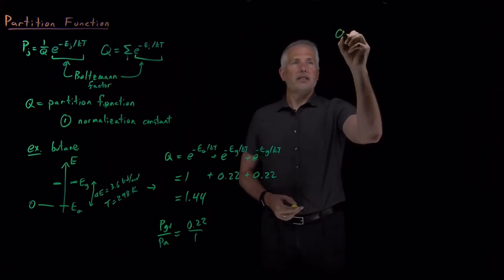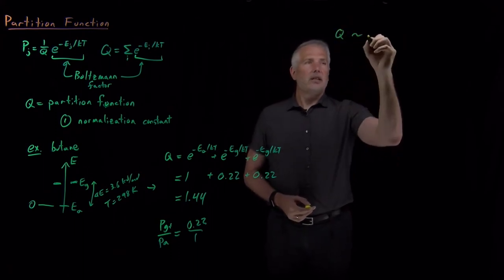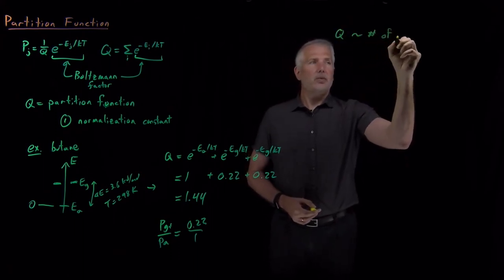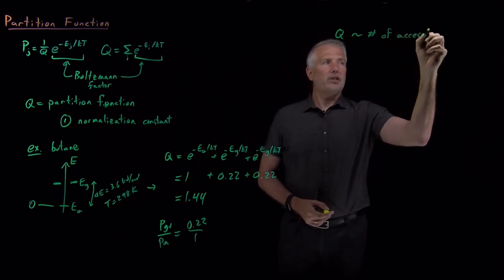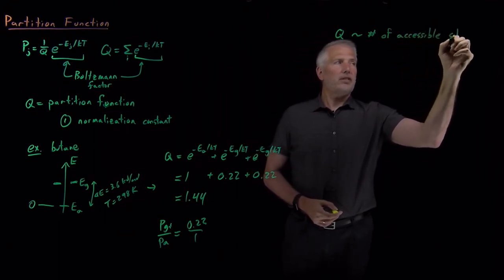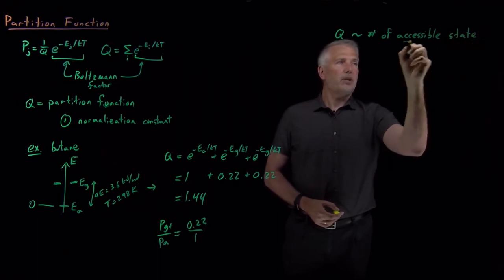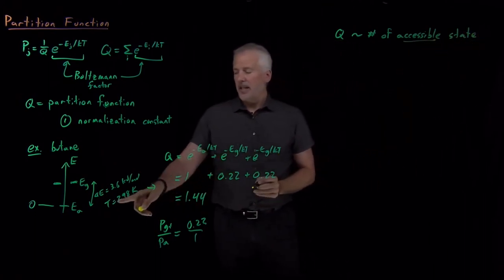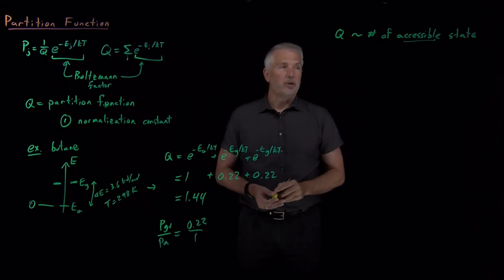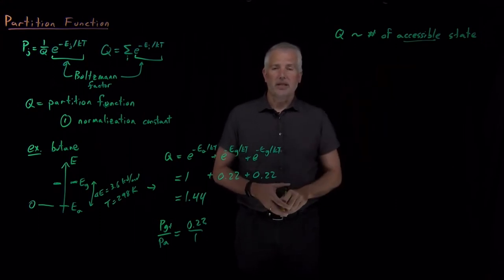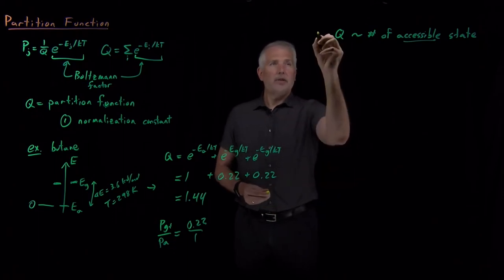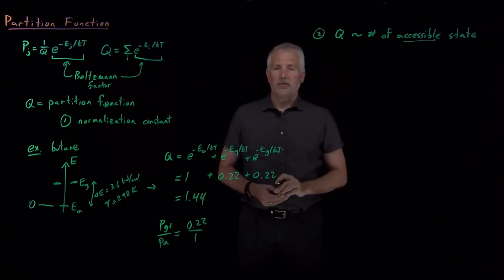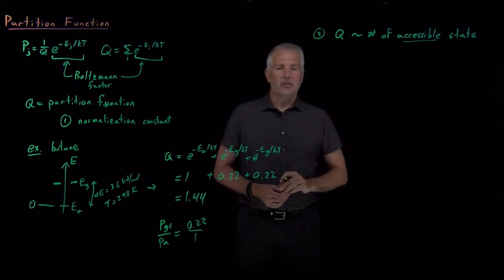So we can often interpret the partition function as not the total number of states in the system, but the number of states that can be reached at the temperature we're interested in — the number of accessible states. That's a much more valuable way of understanding what the partition function means: we can think of it as the number of accessible states.